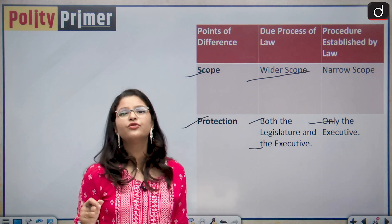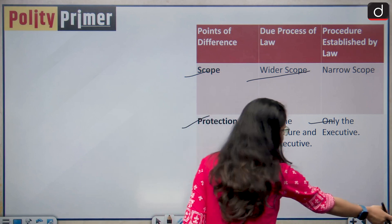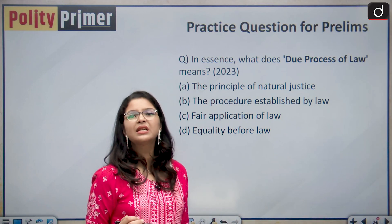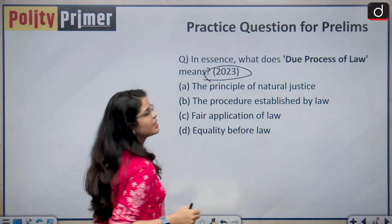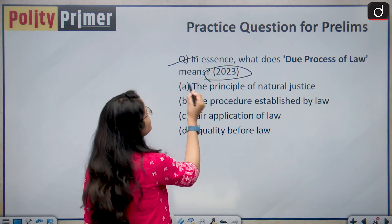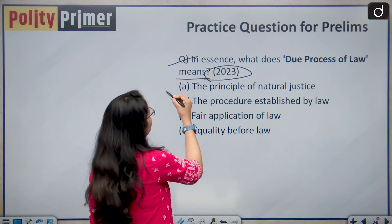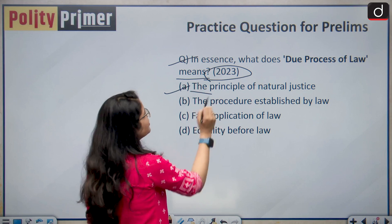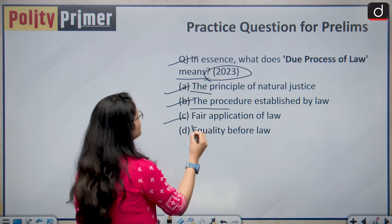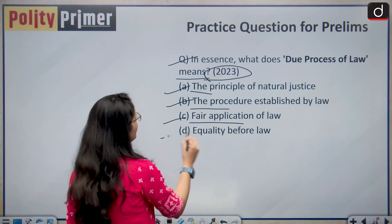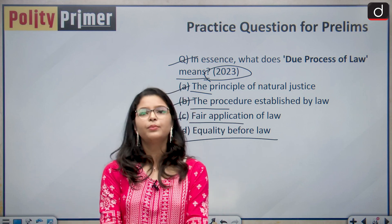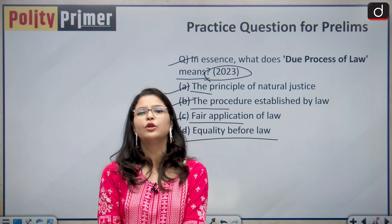For your prelims practice question — this was asked in 2023: In essence, what does due process of law mean? Option A: the principle of natural justice. Option B: the procedure established by law. Option C: fair application of law. Option D: equality before law. Kindly put your answer in the comments box below.